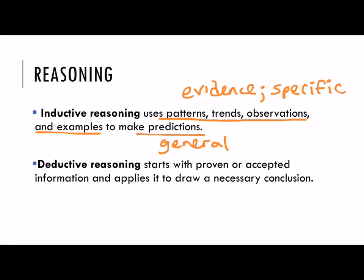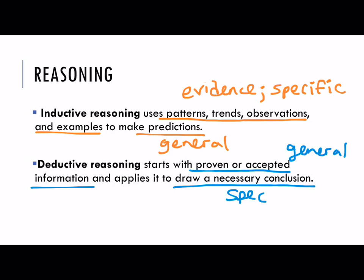On the other hand, deductive reasoning starts with proven or accepted information and applies it to draw a necessary conclusion. So in this case, the premise would be these proven or accepted things, and we're almost starting with a general conclusion — it's kind of flip-flopped. So now the conclusion is more specific. An example of that would be if you start with maybe a formula like the quadratic formula, and then apply that to your specific problem that you're trying to solve — that could be an example of deductive reasoning. So in this case, we are starting with information that's true in general or all the time, and then applying it in specific cases.